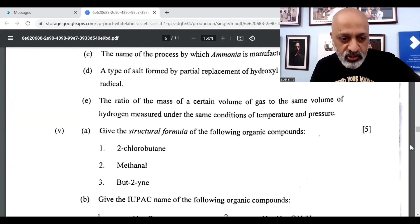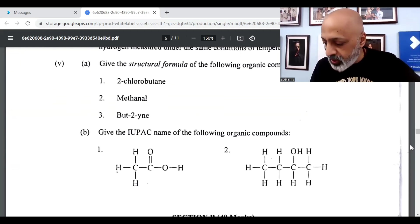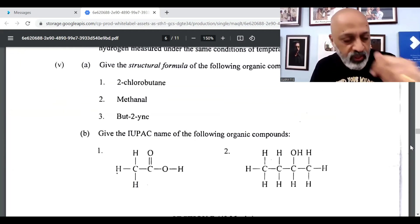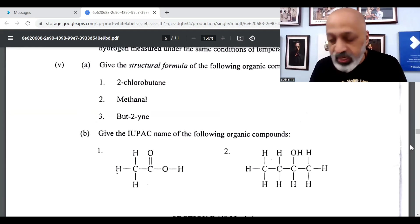Then we are talking about the structural formula. Then the B part, giving the IUPAC name, is ethanoic acid. And the second one is butane-2-ol.